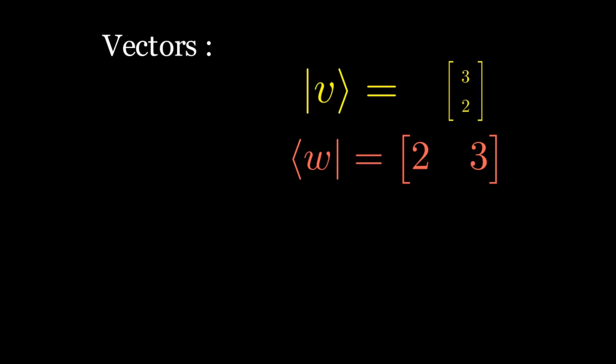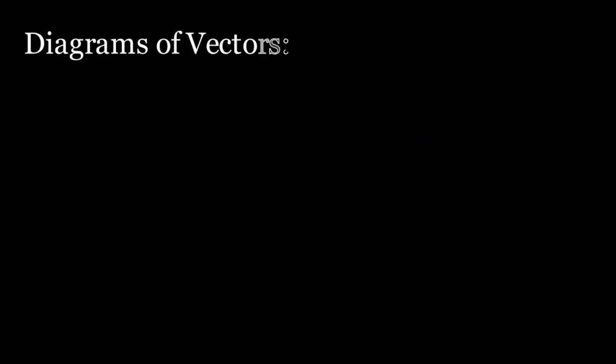Later we will see why we use two different symbols to surround the name, and the reason tells us which side the angle bracket goes. For now, the important thing is to remember that kets refer to columns — just think of the repeated 'k' sound in ket and columns — and that bras have their entries arranged horizontally.